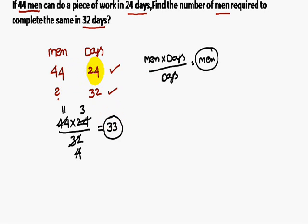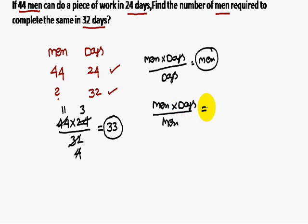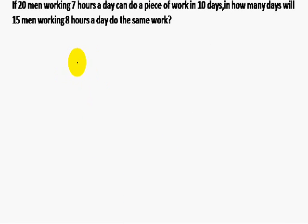The logic is: men × days ÷ days leaves you with men. Alternatively, men × days ÷ men leaves you with days. If you know these two shortcuts, you can solve this type of problem. Next problem: 20 men working 7 hours a day can do a piece of work in 10 days.